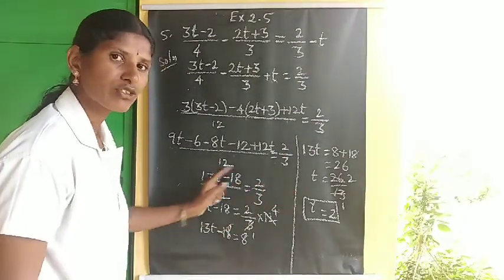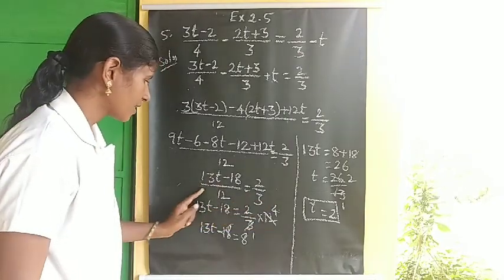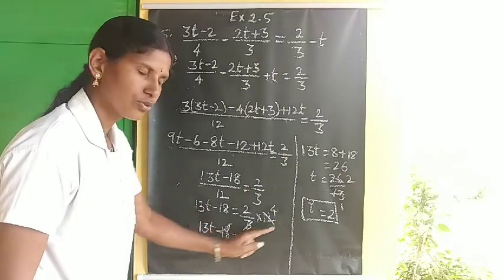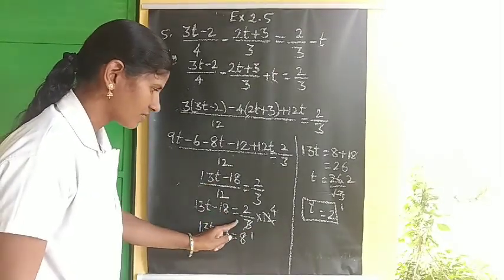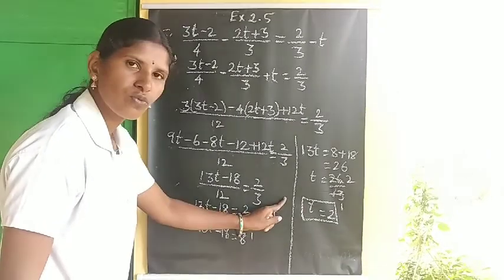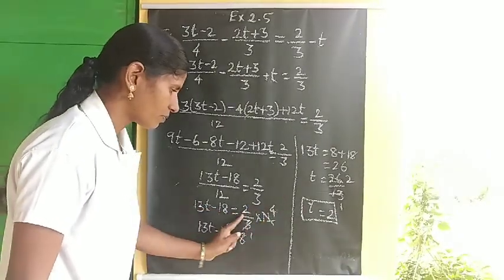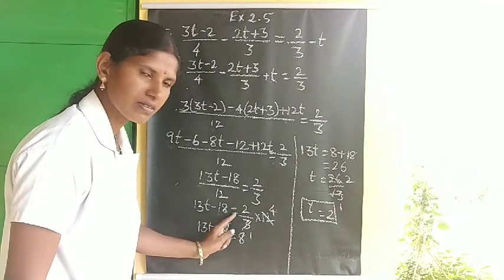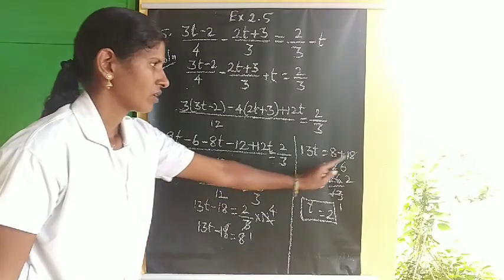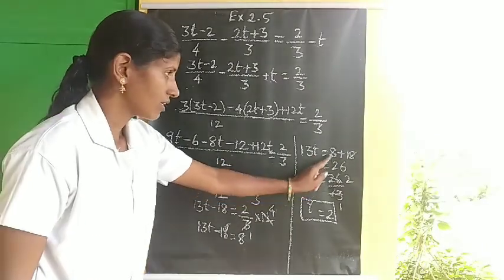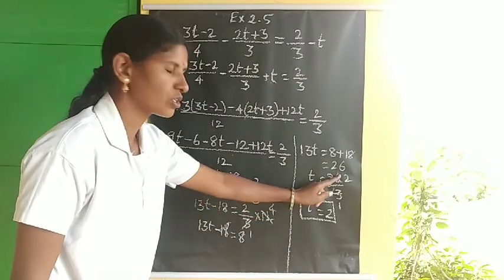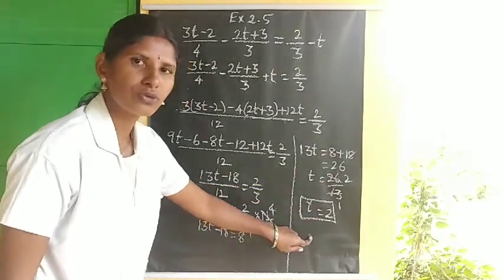Multiplying both sides by 12: the 12 cancels on the left, and 2 by 3 into 12 simplifies to 8. So 13t minus 18 equals 8. Therefore 13t equals 18 plus 8 equals 26, and t equals 26 divided by 13, which is 2.